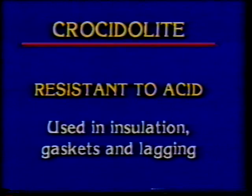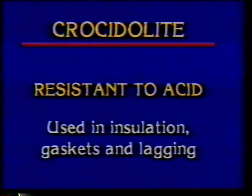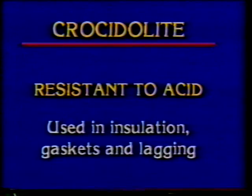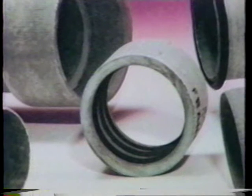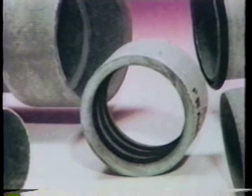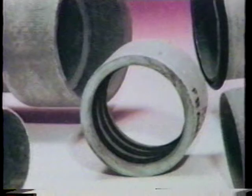Crocidolite asbestos is the least common of the three. Because crocidolite is highly resistant to acid, it has been used for thermal insulation, gaskets, and lagging where corrosion by acids or other chemicals would deteriorate other substances, giving products containing these fibers a much longer service life. Some types of asbestos fibers actually have a tensile strength — a resistance to being pulled apart — similar to that of steel, making them very useful in strengthening certain products such as cement pipe, woven textiles, and gaskets.